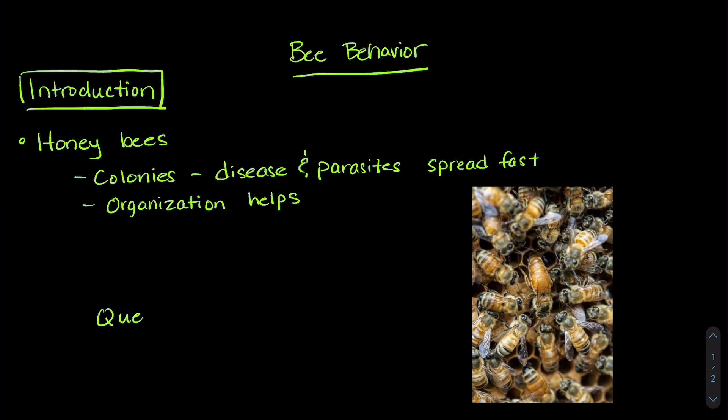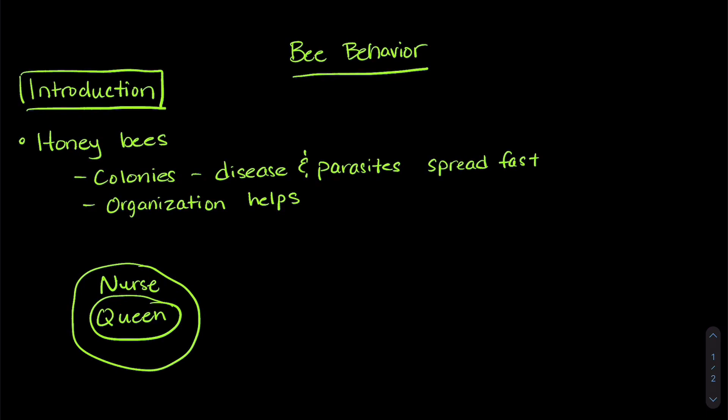For example, the queen can usually be found near the center of the colony and surrounded by nurse bees. Foragers live near the entrance to the colony. They're the ones that are more likely to bring disease or parasites back because they're the ones that travel out to find food. With this organization, it's more difficult for diseases and parasites to infect the queen and nurse bees because they aren't as close to the hive entrance.